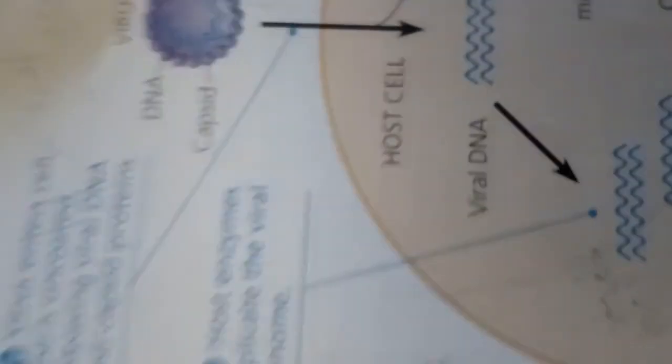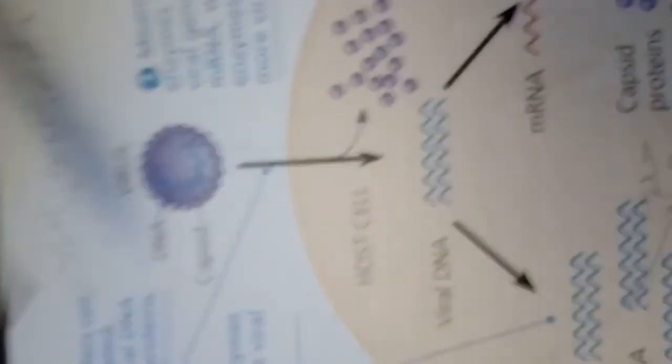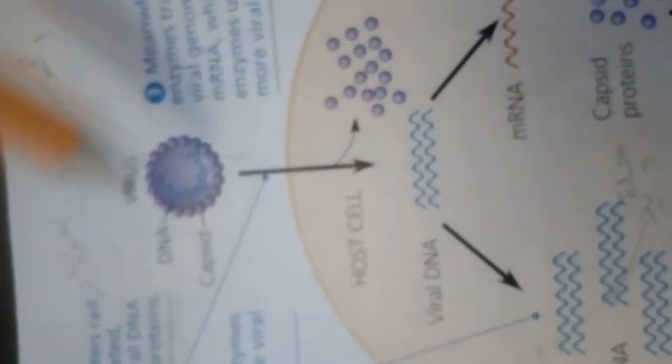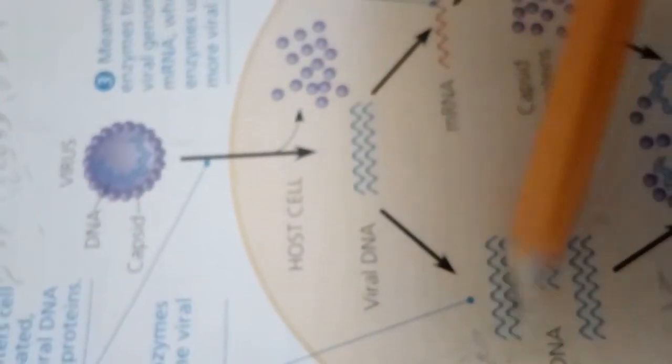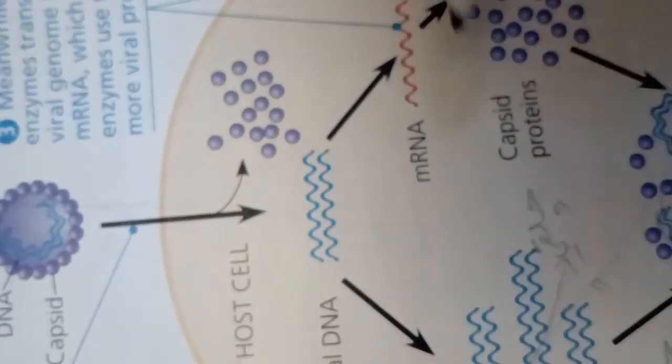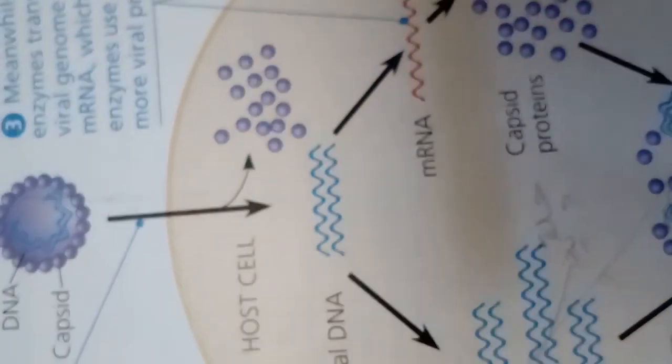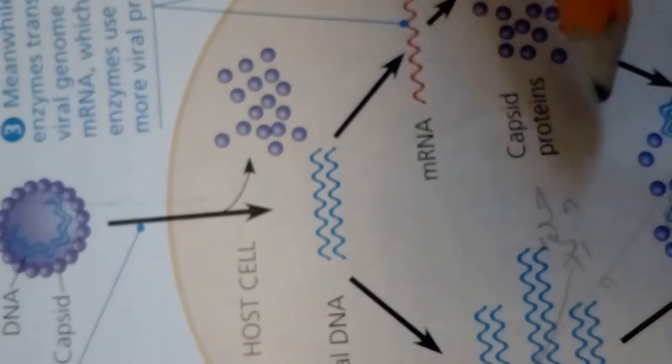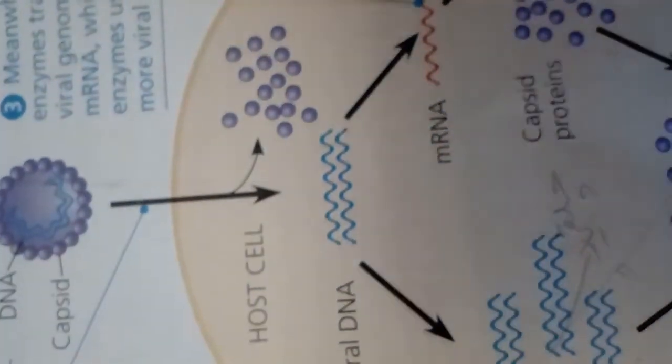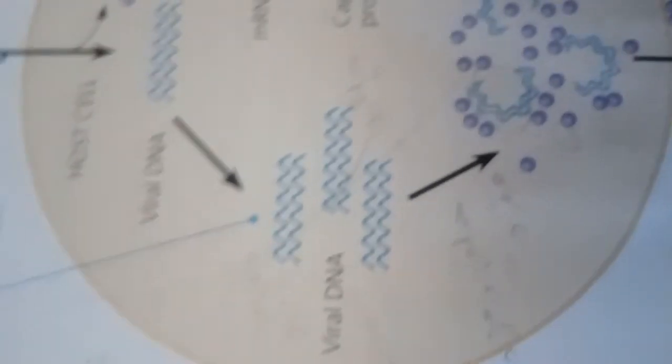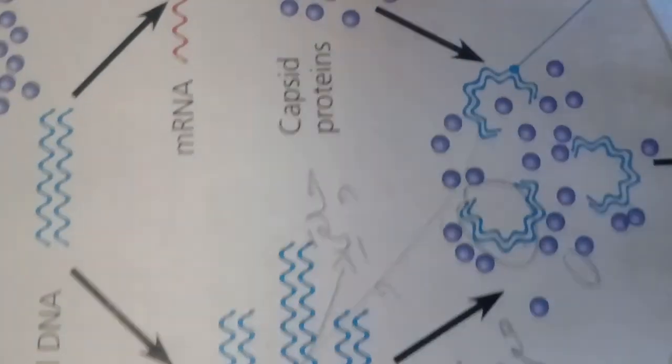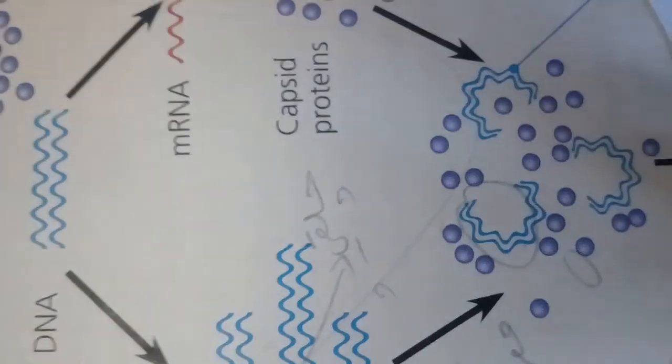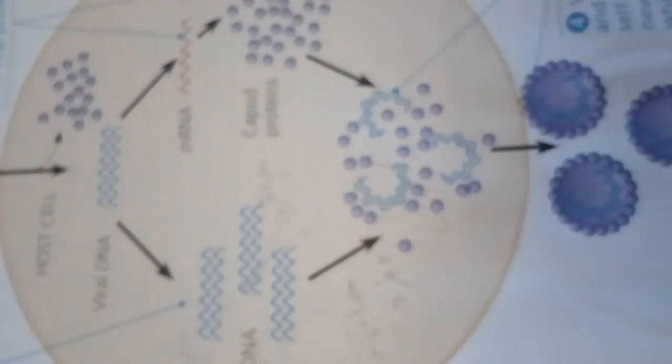Let's begin. First, a virus enters the cell and is uncoated, releasing viral DNA and capsid proteins. Step two: host enzymes replicate the viral genome. Step three: meanwhile, host enzymes transcribe the viral genome into viral mRNA, which other host enzymes use to make more viral proteins. Last step: viral genomes and capsid proteins self-assemble into new virus particles which exit the cell. Okay, thanks for listening.